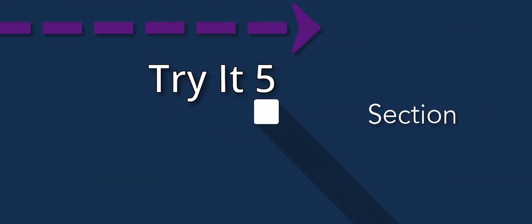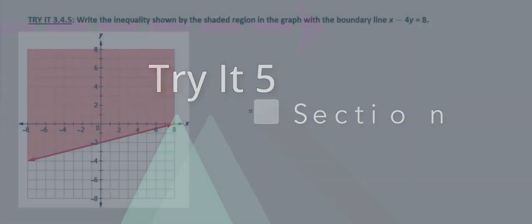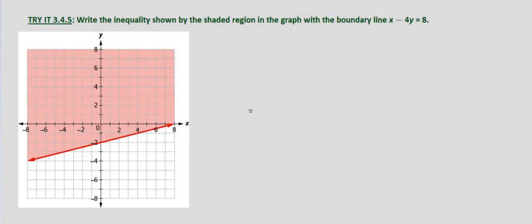We're asked to write an inequality based on a graph and the equation of the boundary line that's given. We don't need it in slope-intercept form because it's not indicated. The process is essentially the same.